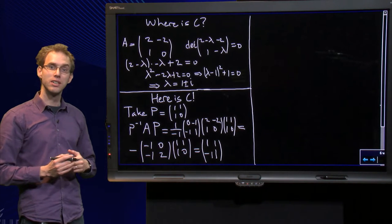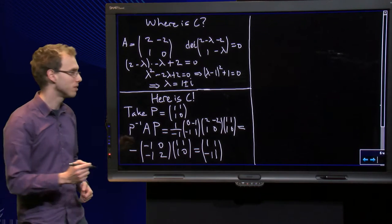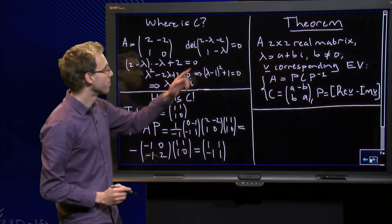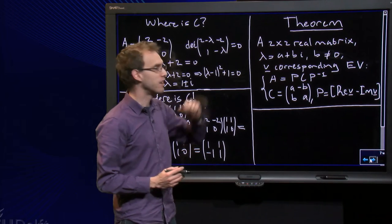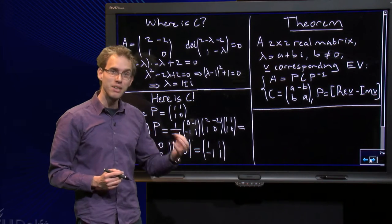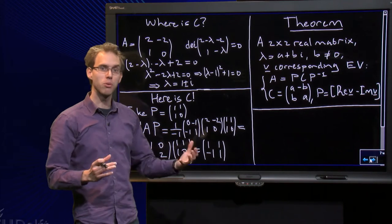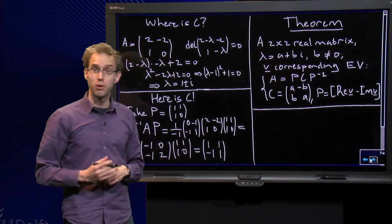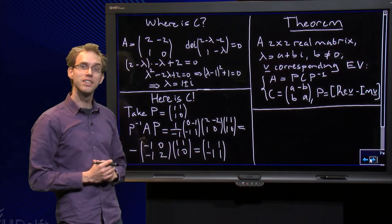How can we find such a C in general? Well, we have a theory which tells us how to do it, which is summarized over here. If A is a real 2 by 2 matrix with eigenvalue equal to lambda equals a plus bi, and I want a real complex eigenvalue, so that's why we need b not equal to zero. Let V be the corresponding eigenvector, corresponding to lambda. How can we find the C and the P?